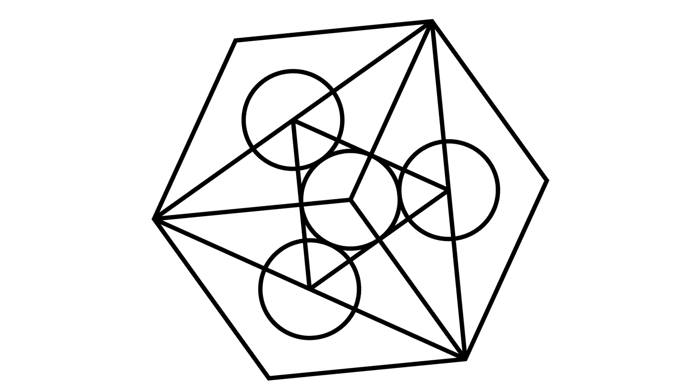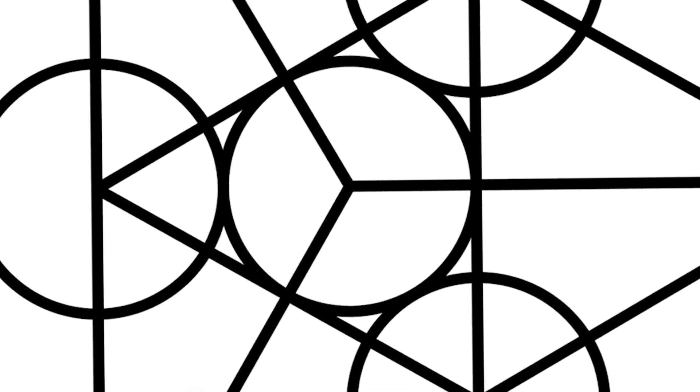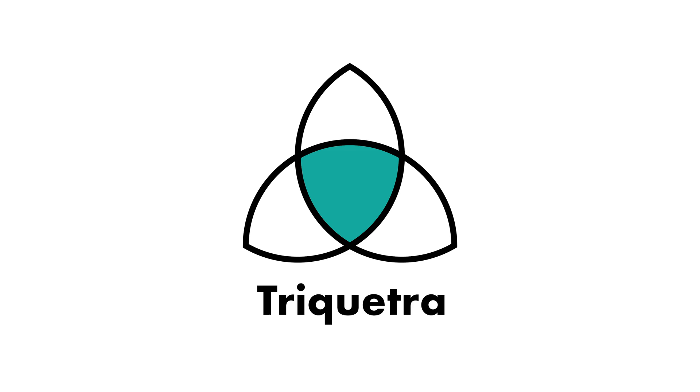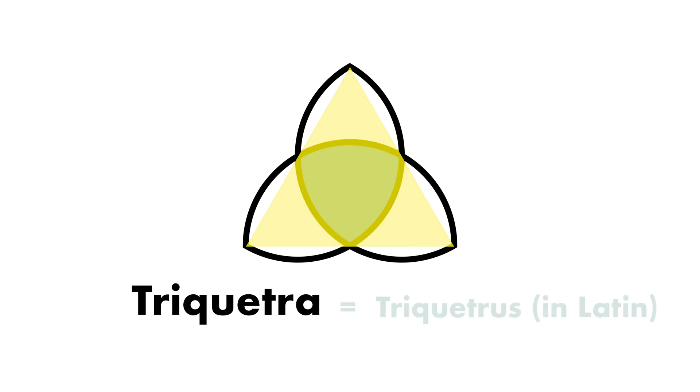This shape has been adopted by many cultures and it is called the triquetra. The word triquetra simply means triangle or three-cornered, which translates to triquetra in Latin. In Christianity, this shape has been used as a religious symbol representing the Father, Son, and the Holy Spirit.